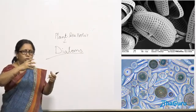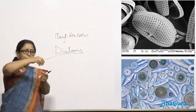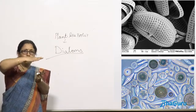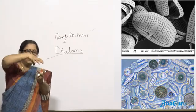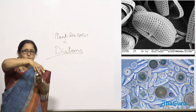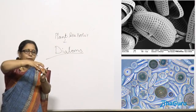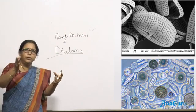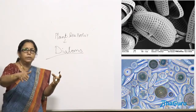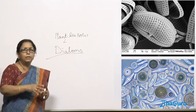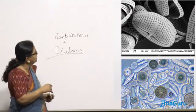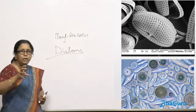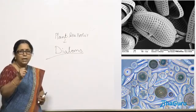Soap boxes have a lid and an inside part — similarly, diatoms have two shells which fit one over the other like a soap box. Whenever they divide, both boxes separate and each half produces another half. These diatoms are well known because their shell contains a lot of silica.